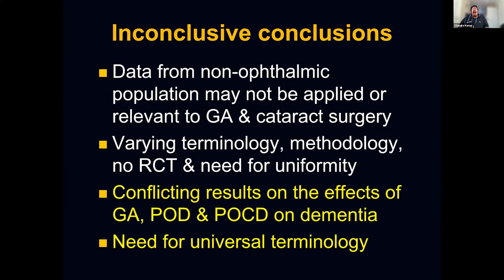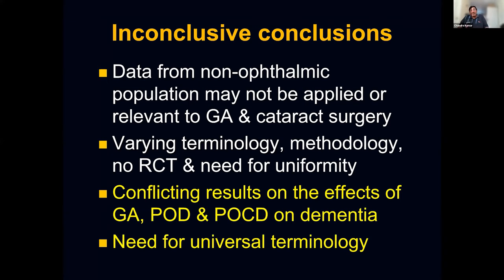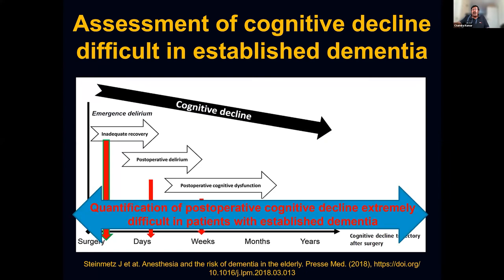The evidence is inconclusive because data come from non-ophthalmic populations, which may not be relevant to GA and cataract surgery. There is varying terminology across studies, varied methodology, and no randomized controlled trials. The conflicting findings on GA, POD, and POCD reflect the lack of uniform terminology and methodology.